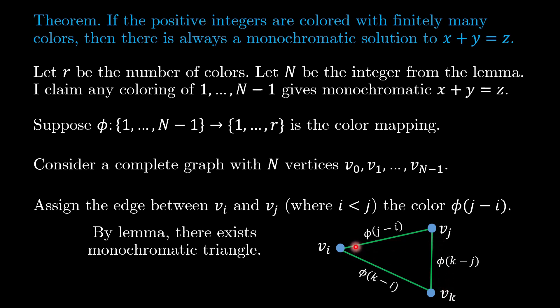Well, then the edge here is the color for the integer j minus i. The edge here is the color for the integer k minus j. And the edge here is the color for integer k minus i. And these are all of the same color.